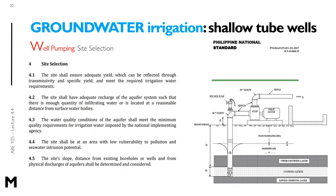According to PAES, for site selection when building a well pump, the site shall ensure adequate yield reflected through transmissivity and specific yield, and shall meet the required irrigation water requirements. The site shall have adequate recharge of the aquifer system such that there is enough quantity of infiltrating water, or it is located at a reasonable distance from surface water bodies. The water quality conditions of the aquifer shall meet the minimum quality requirements for irrigation water, and the site shall be in an area with low vulnerability to pollution and seawater intrusion potential.